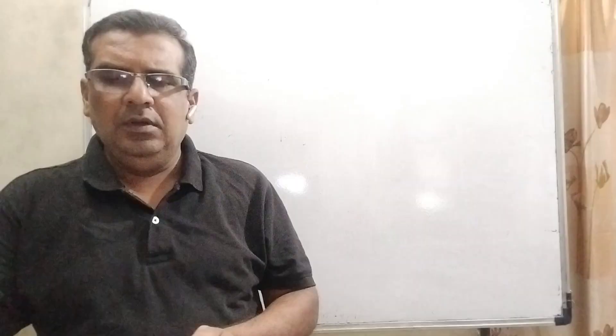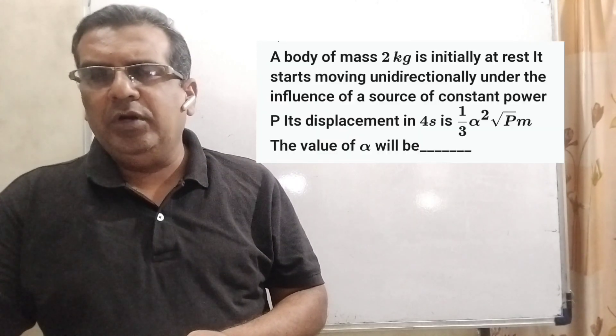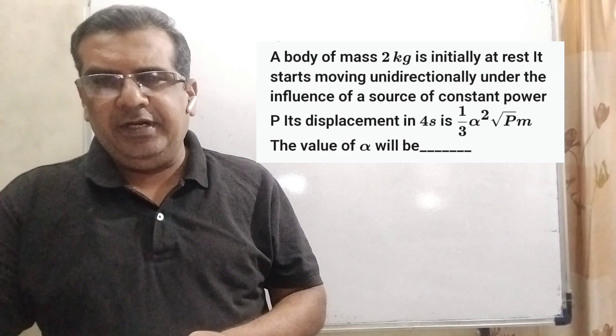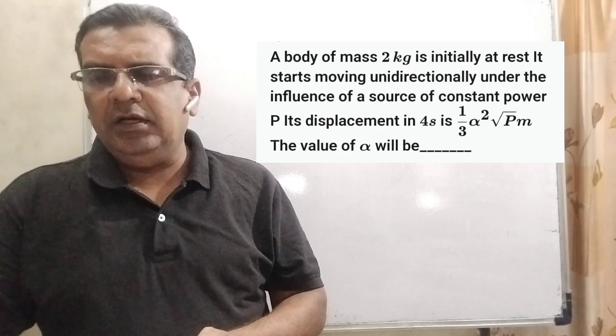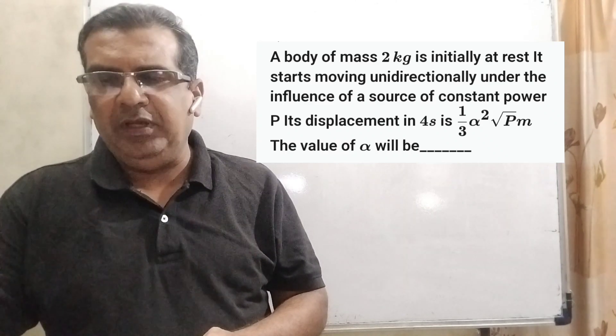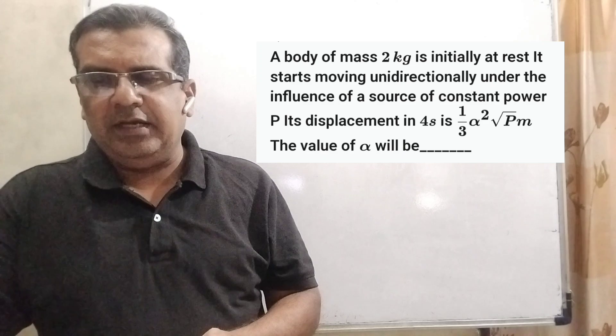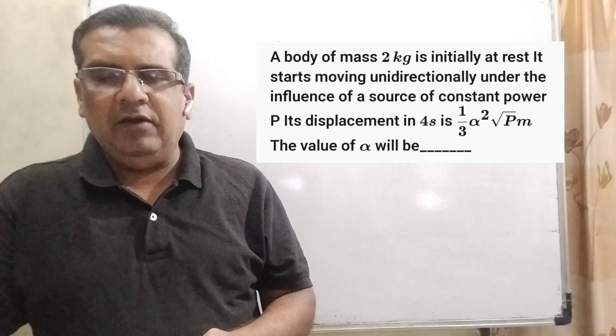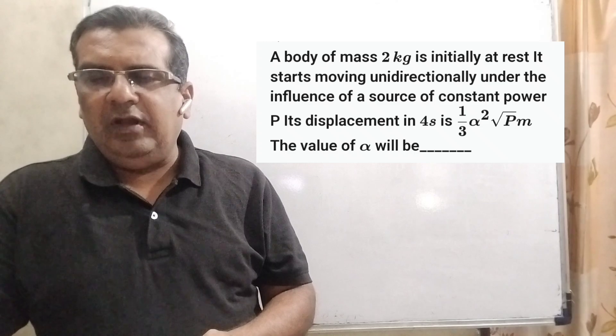Thank you once again. Now, here is the question. A body of mass 2 kg is initially at rest. It starts moving unidirectionally under the influence of a source of constant power, capital P. Its displacement in 4 seconds is (1/3)α√P meter. The value of alpha will be?